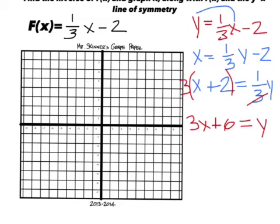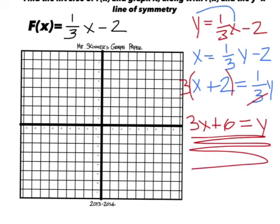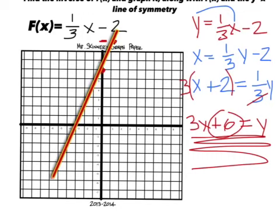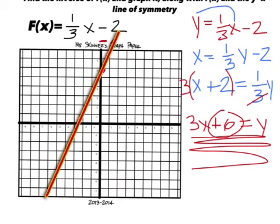To graph it by hand, use six as your y-intercept — make a dot. The slope is three, so go up three and over one. You can draw a line there. Then for the original function, the y-intercept is negative two, so make a dot at negative two.